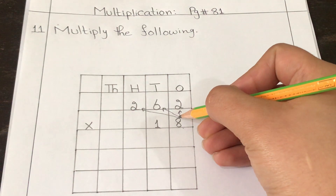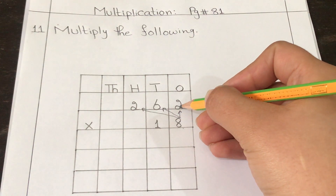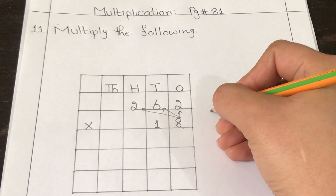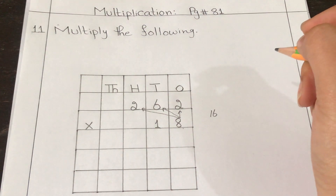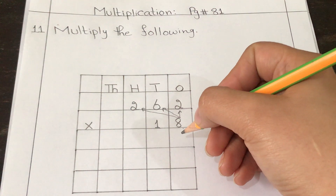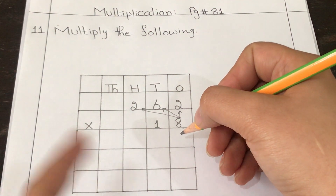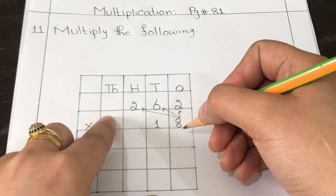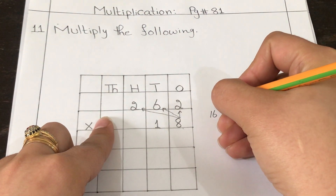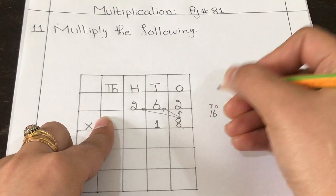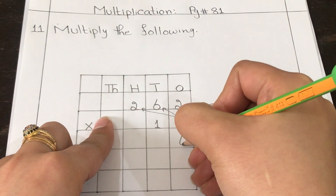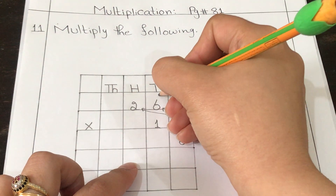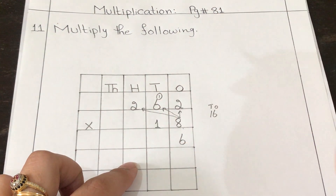Let's start the multiplication. First, multiply eight by two: eight twos are sixteen. Sixteen is a two-digit number, so we need to do the conversion. Since we are multiplying in the ones place, the ones place digit is written in the ones column and the tens place digit is carried to the tens column.